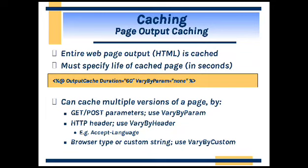In page output caching, the entire webpage output is cached. In this case, we can specify the life of the cached page — that is, we can specify the parameter 'duration', specifying how long a particular data has to be cached. We can also use a 'VaryByParam' attribute for specifying different parameters.